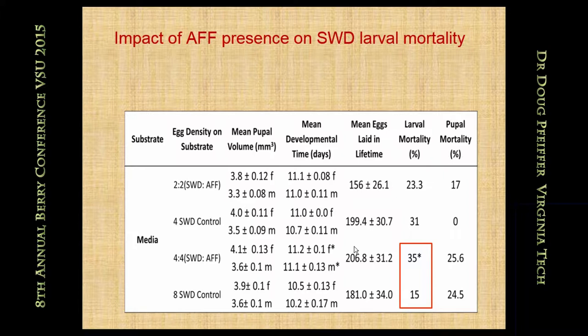The African fig fly has a weak ovipositor, similar to native drosophila — it doesn't have the big serrated, armored ovipositor that Spotted Wing Drosophila does. So what may be happening is it follows injury made by Spotted Wing Drosophila and then out-competes it. In the experiment, treatments were four Spotted Wing combined with four African fig fly compared with eight Spotted Wing. The larval mortality of Spotted Wing is more than double when it is in the presence of African fig flies, so these flies appear to be out-competing and causing higher death in Spotted Wing Drosophila.